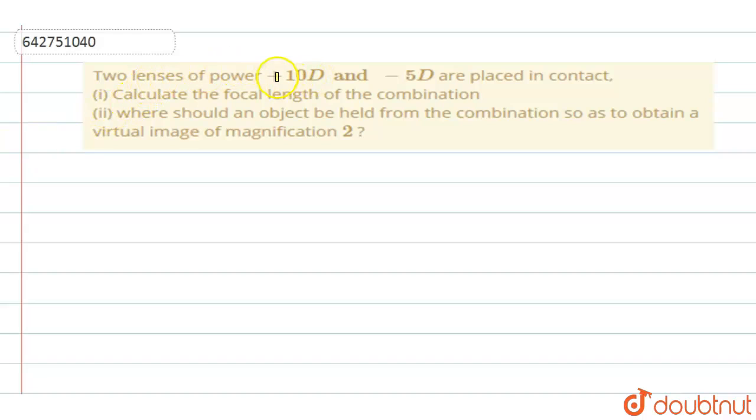Two lenses of power 10 diopter and minus 5 diopter are placed in contact. Calculate the focal length of the combination. Where should an object be held from the combination so as to obtain a virtual image of magnification 2?